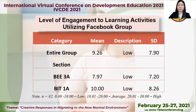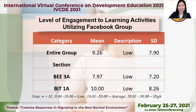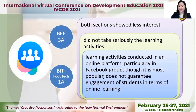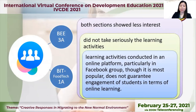Here is the result of the study — level of engagement to learning activities utilizing Facebook group. The results showed that the student's engagement in the learning activities utilizing Facebook group was low. Students' engagement when taken as a whole was low. When grouped according to section, the BEE 3A students' engagement was low, likewise the BIT Food Tech 1A was low. This means that both sections showed less interest working with their learning activities in the Facebook group, and the students did not take seriously the learning activities given by the instructor. Learning activities conducted in an online platform, particularly in Facebook group, though it is most popular, does not guarantee engagement of students in terms of online learning.